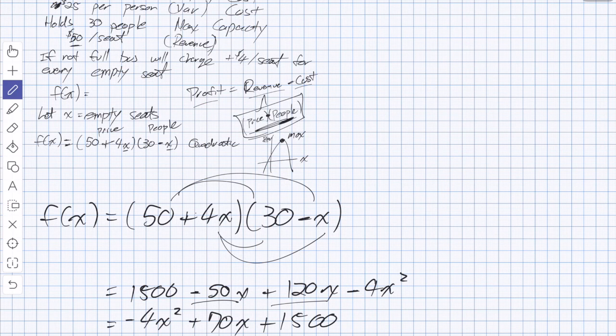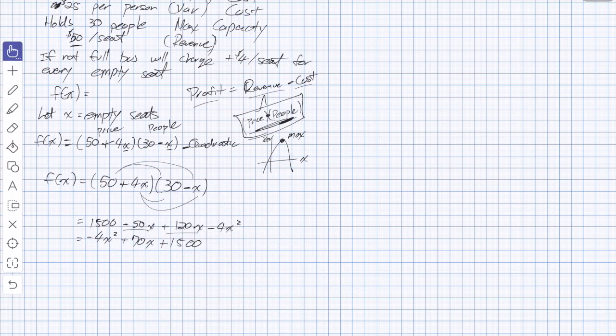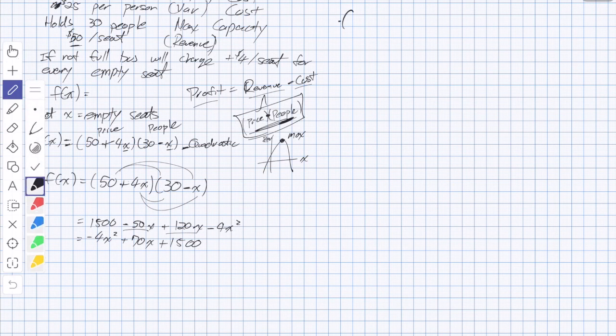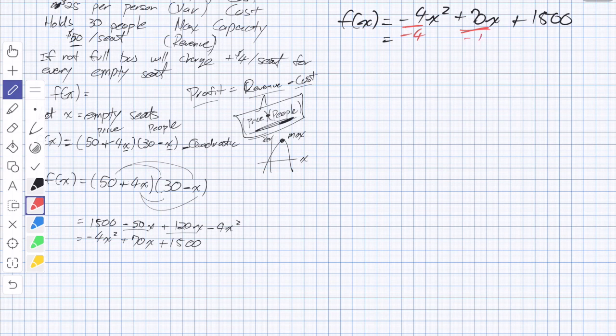So negative 4x squared, then we have negative 50 and positive 120, this should be positive 70x, and finally plus 1,500. So here's our function in standard form. How do I find maximizing? Well, maximizing, we take standard form and we complete the square. Do you remember completing the square?